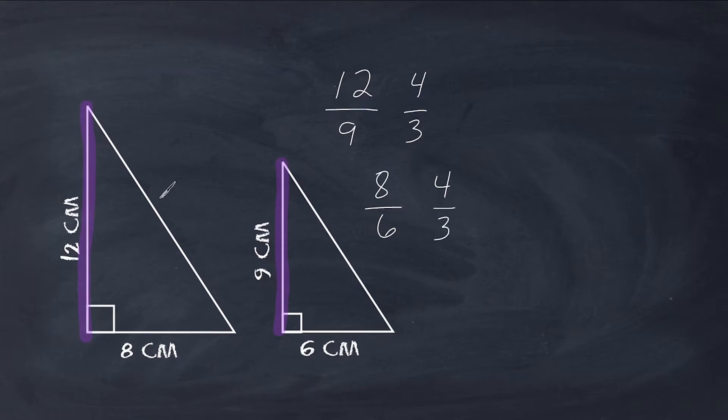So not only do the heights have a ratio of 4 to 3, but the bases of the triangle do as well. So that is one way to confirm whether or not your shapes are similar. And in this case, these triangles are similar to each other.